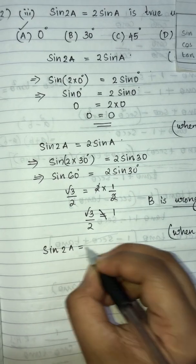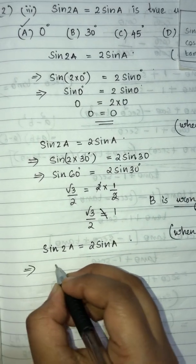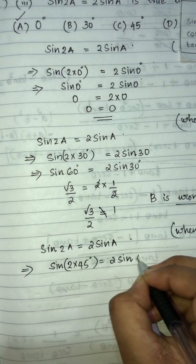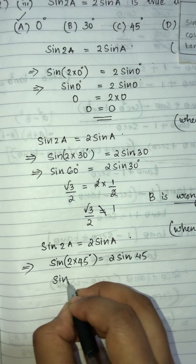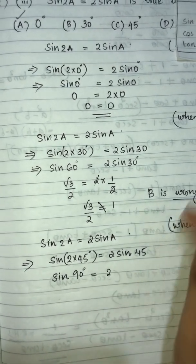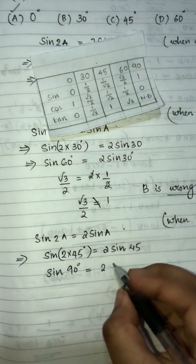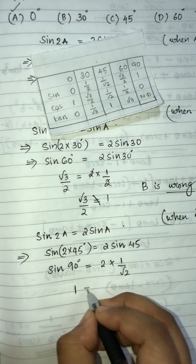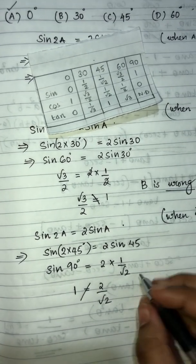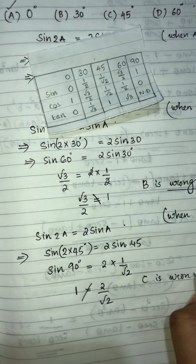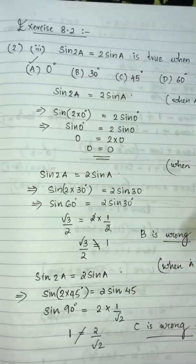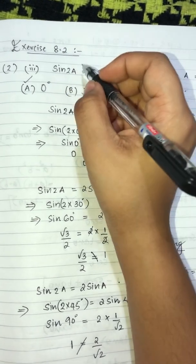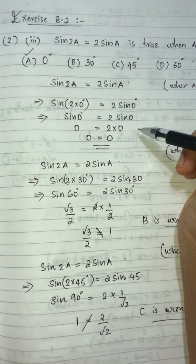Checking option C: a = 45°. sin(2 × 45°) = 2 sin 45°, so sin 90° = 2 sin 45°. sin 90° = 1, and 2 sin 45° = 2/√2. Since 1 ≠ 2/√2, option C is wrong. Therefore sin 2a = 2 sin a is true when a = 0°, option A is correct.